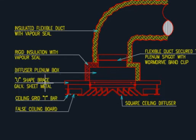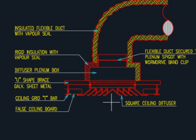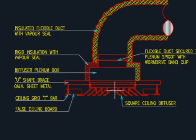This is a U-shape of brass carbonized sheet steel. This is a ceiling grid T-bar. This is a false ceiling board. This is a square ceiling diffuser. So this is simply a diffuser — you can call it a ceiling diffuser.